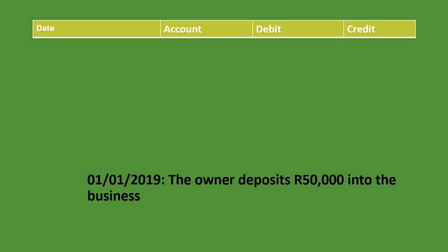Our first transaction tells us that on the 1st of January 2019, the owner deposited 50,000 rand into the business. When the owner deposits money into the business we have to record that transaction. The question is: what are the two accounts involved? That's very important to know before you do your journals. Well, the first one is capital and the second one is bank, because money is coming into the bank. The bank is increasing and capital is increasing as well.